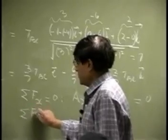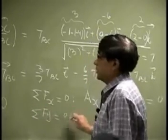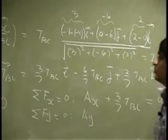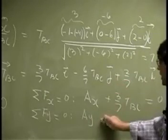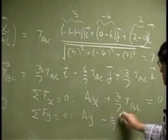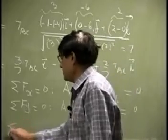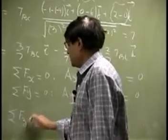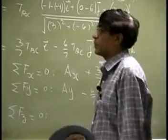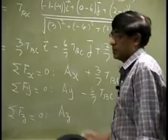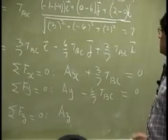Then we sum the force in the Y direction, we are looking at the Y component which is AY, then we have negative 6 sevenths TBC, that will go to 0. Then we sum the Z components and we get AZ, then we have...